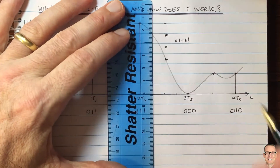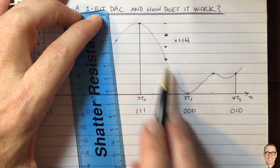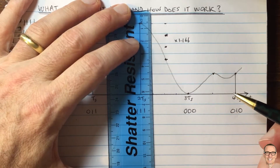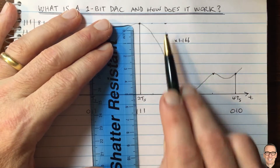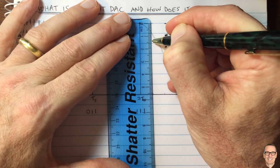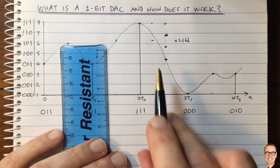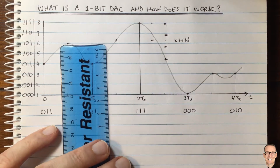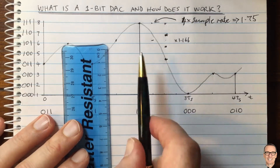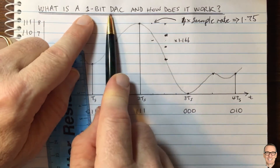Now at four times the rate, looking at this extreme worst case, we now only need two levels. But those two levels need to be spaced 1.75 times apart, so they can reach halfway down in each time slot. If you have this spacing, you only need two levels — and that is our one-bit DAC. So by going to a higher sampling rate we've arrived at a one-bit DAC.